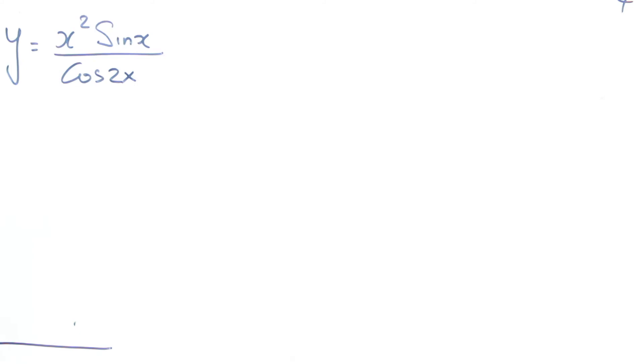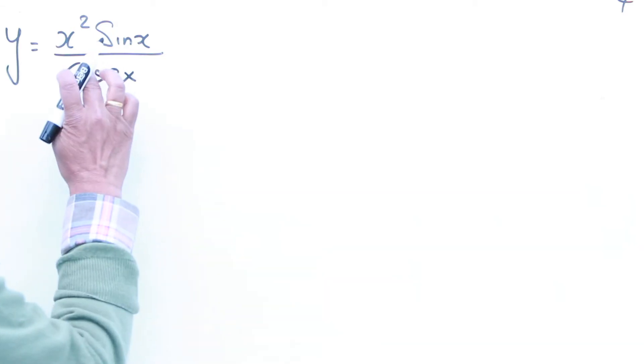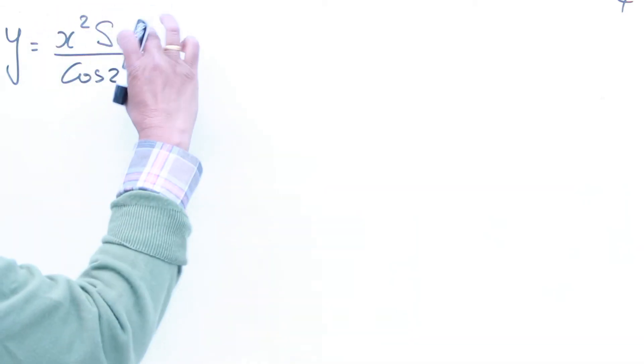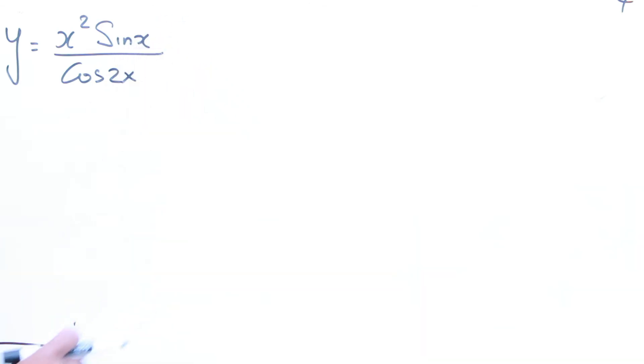This question is all about differentiation. If you have questions like this, y equals x squared sin x divided by cos 2x, if you are going to do it, then you have to use a product rule for these, then after that you have to do the quotient rule. Rather than doing that, why can't we do something completely different?